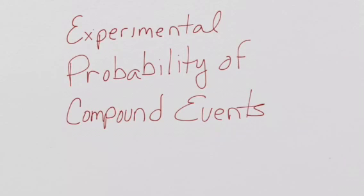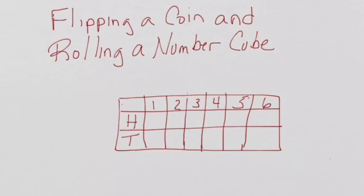OK, today we're going to talk about experimental probability of compound events. This is a time when you actually do an experiment to figure it out. So, say you were flipping a coin and rolling a number cube.